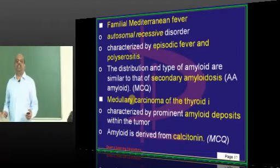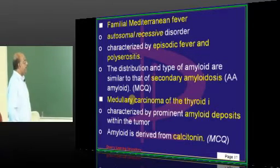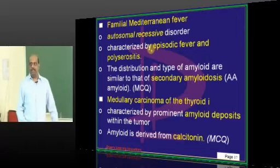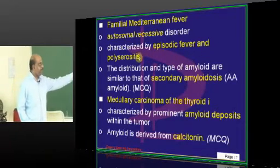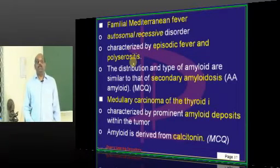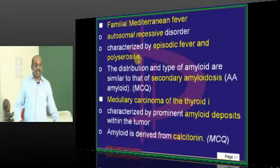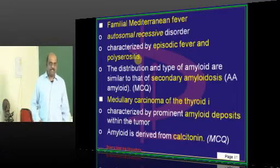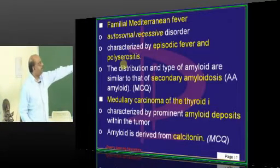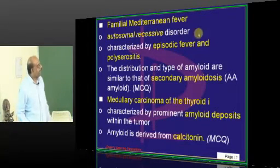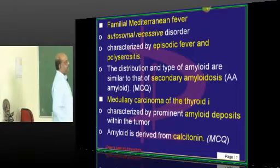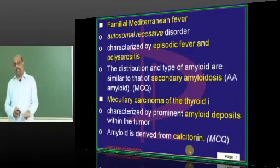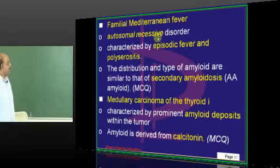Familial Mediterranean fever is an autosomal recessive condition with episodic fever. Just like in rheumatoid arthritis and SLE, there are polyserositis features — pleuritis, peritonitis. In familial Mediterranean fever there will be amyloidosis similar to secondary amyloidosis.